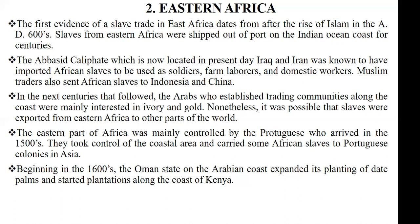The eastern part of Africa was mainly controlled by the Portuguese, who arrived in the eastern part of Africa in the year 1500s. They took total control of the coastal area and carried African slaves to their colonies in Asia. This means that the Portuguese who took control of the eastern part of Africa transported Africans as slaves to their colonies all the way in Asia.